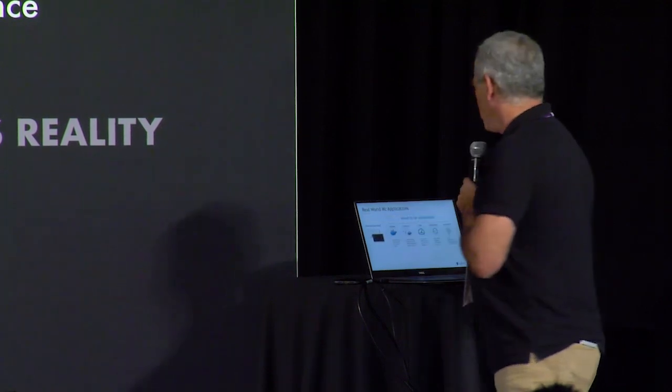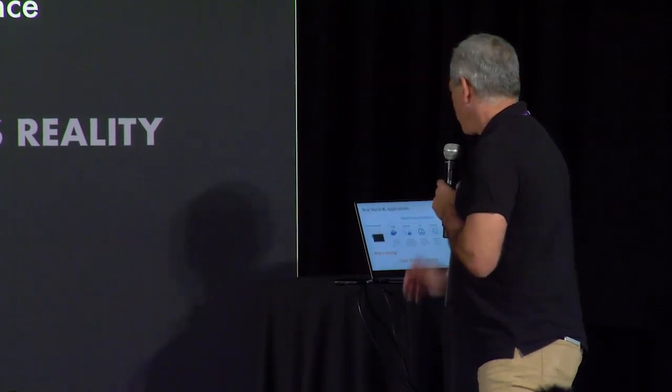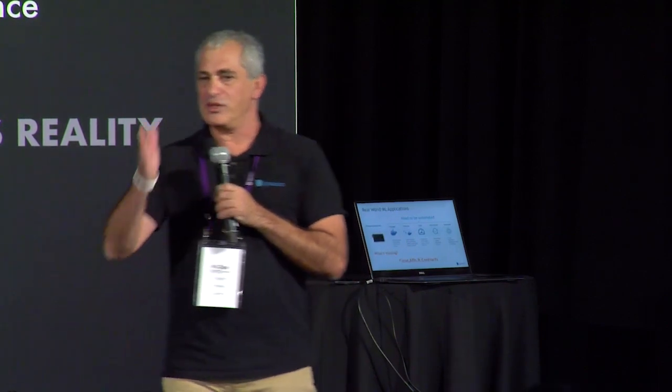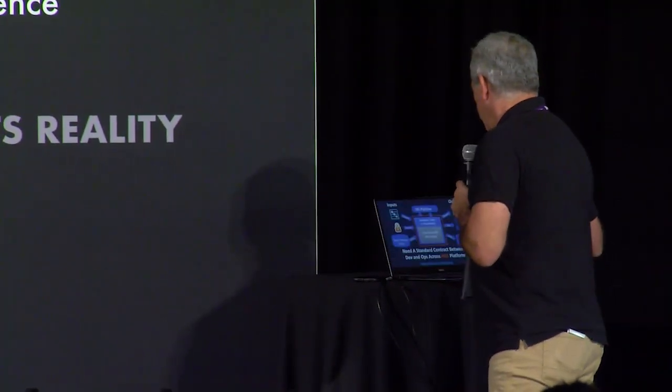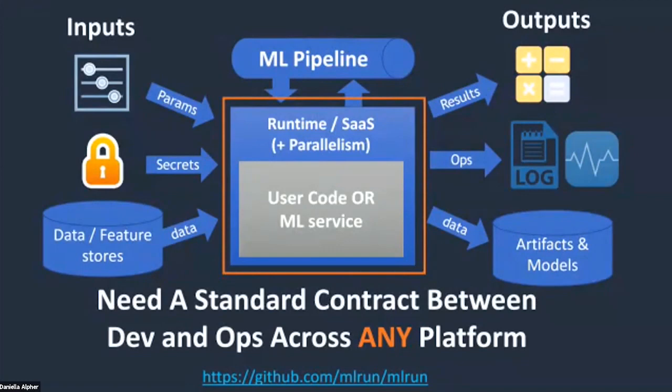We need more and more automation. What's missing to get this nirvana, from my perspective — as David just said — is we're missing a contract. We're missing the line where the work of one person ends and the other continues. What's the contract between the data scientists and the DevOps or the data engineers?